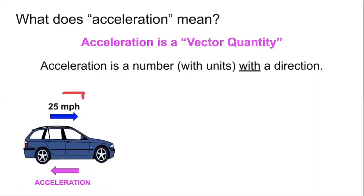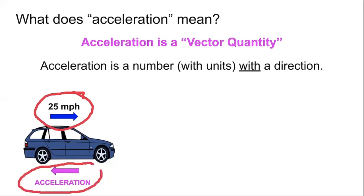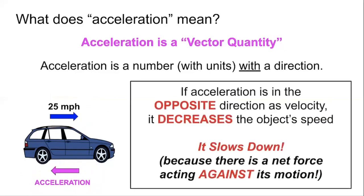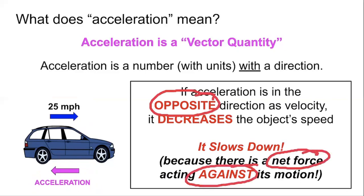Here's an example of that same car moving to the right at 25 miles an hour, but its acceleration is now pointed to the left. The car is moving to the right, but there is a net force acting against its motion to the left. What would that do to the car? Of course, the answer is it would slow the car down. So if the acceleration is acting opposite the direction of motion — meaning there is a net force acting against its motion — the result is to decrease the object's speed. In other words, it slows down.